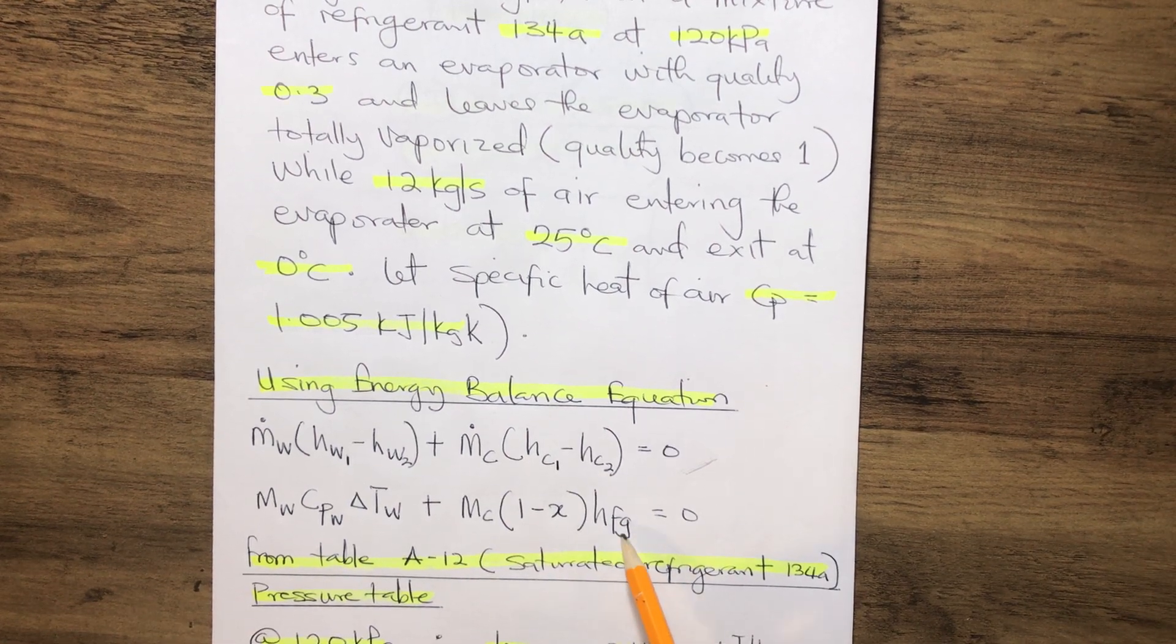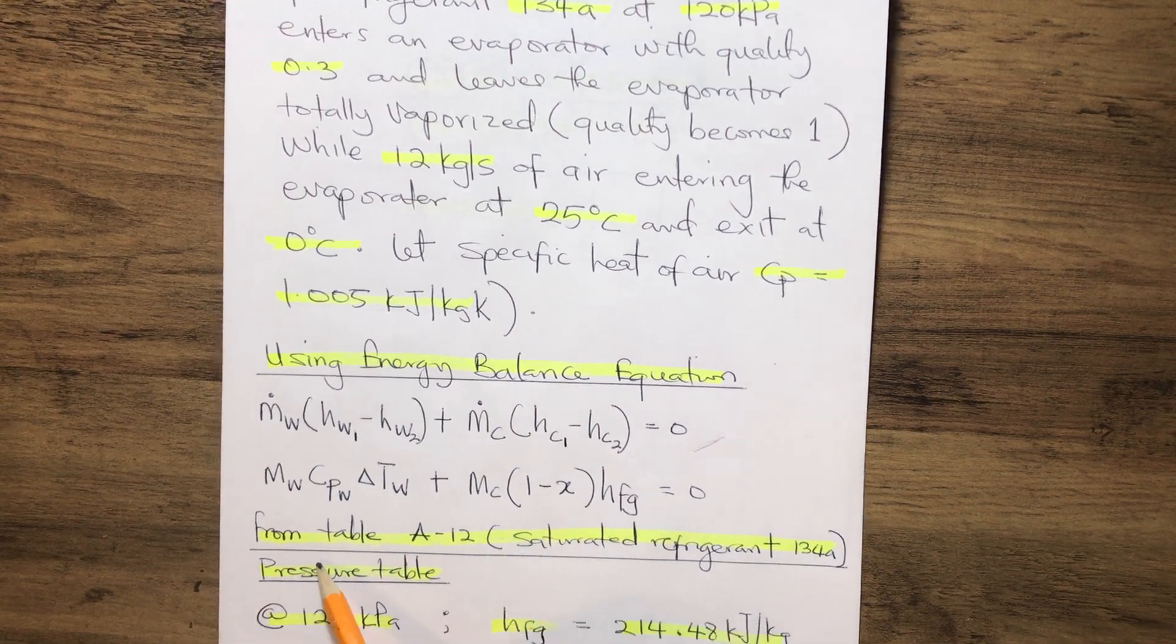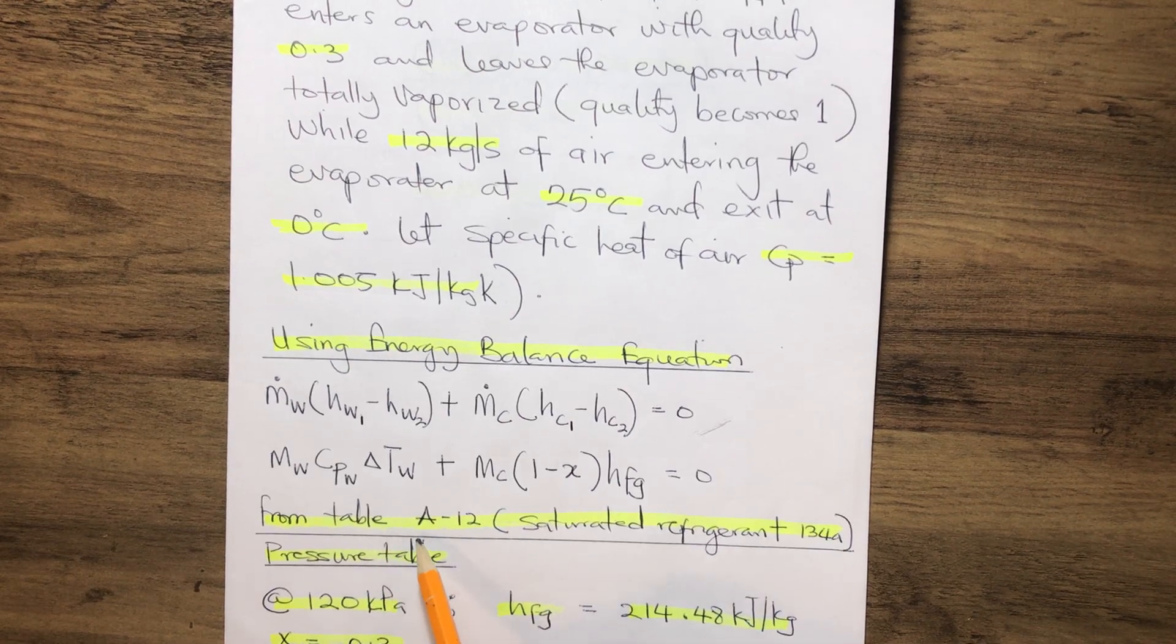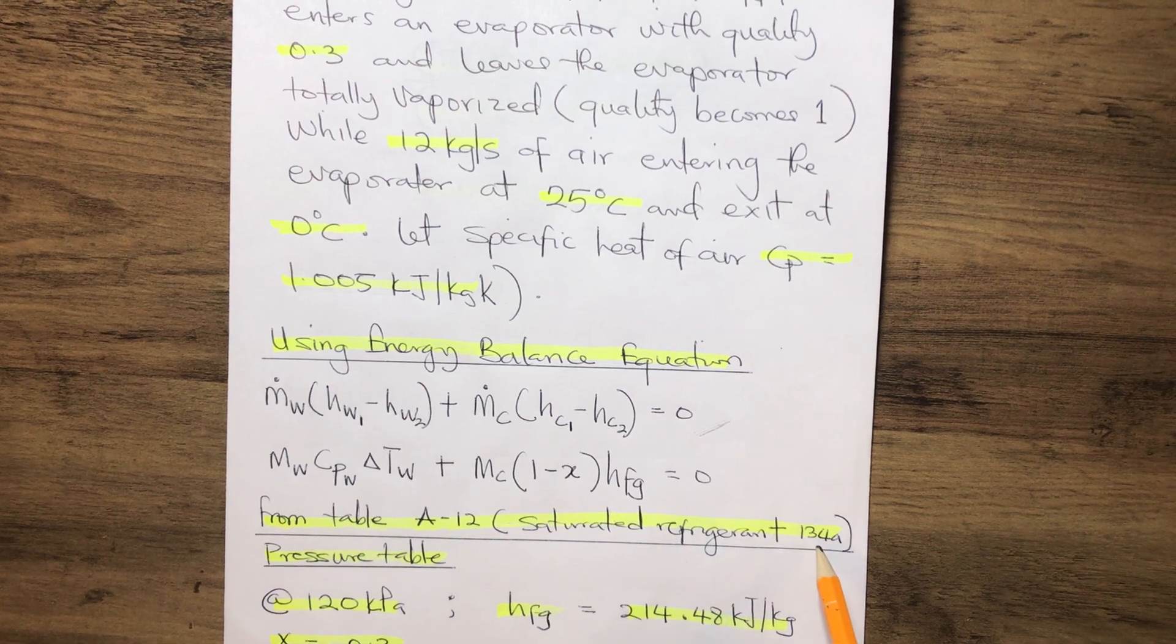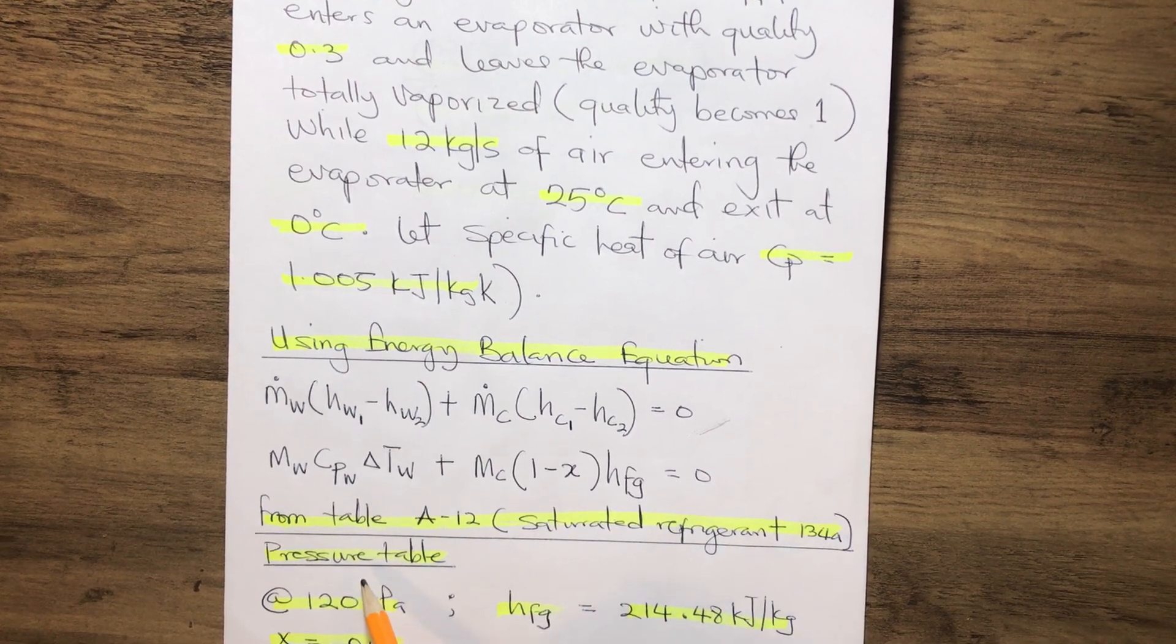So, how do we find the HFG? From the table, page A12 of the saturated refrigerant 134a on the pressure table,